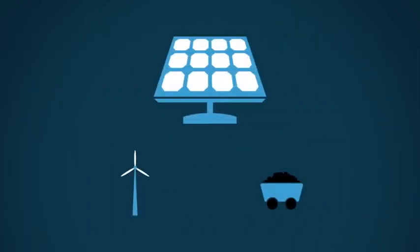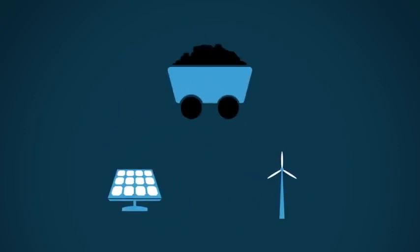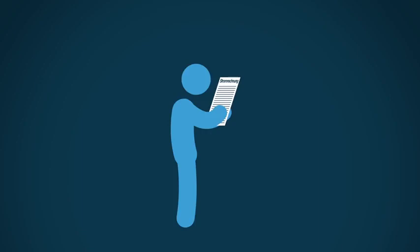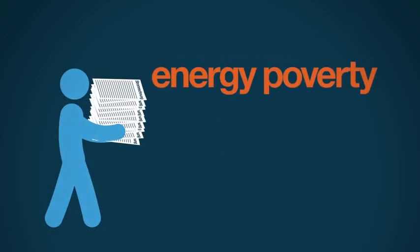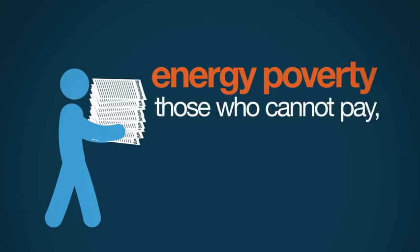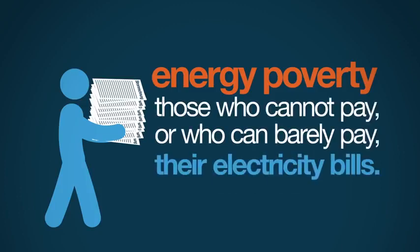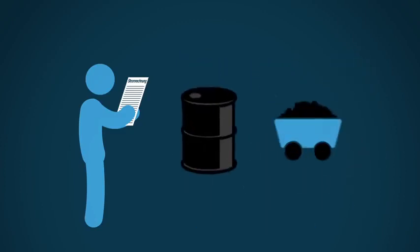Furthermore, switching back and forth between solar and wind and coal to maintain a steady flow of energy is costly. Utility bills for the average German have gone up so dramatically that energy poverty has become a popular term to describe those who cannot pay, or who can barely pay, their electricity bills. If those bills one day go down, the reason will not be more solar and wind energy, but lower oil and coal prices. There's no free lunch. And there's no free energy. And that very much includes the highly expensive energy from the sun and the wind.